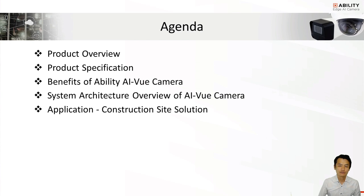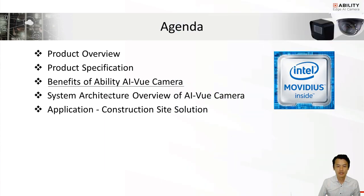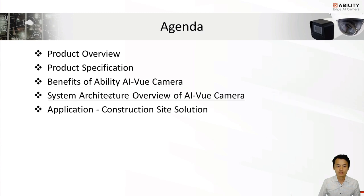There are five topics on the agenda. The first topic is product overview. The second topic is product spec with bullet and dome type AI camera. The third topic is the benefits of Ability AI View Camera, designed with Intel Movidius Myriad X VPU. The fourth topic is the system architecture of AI View Camera. And finally, we have a POC for construction site solution.